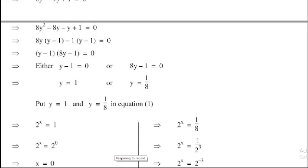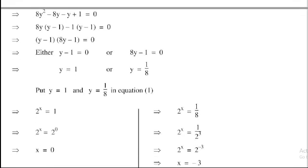Next, 2^x = 1/8. Since 1/8 = 2^(-3) in power form, we get 2^x = 2^(-3), so x = -3.